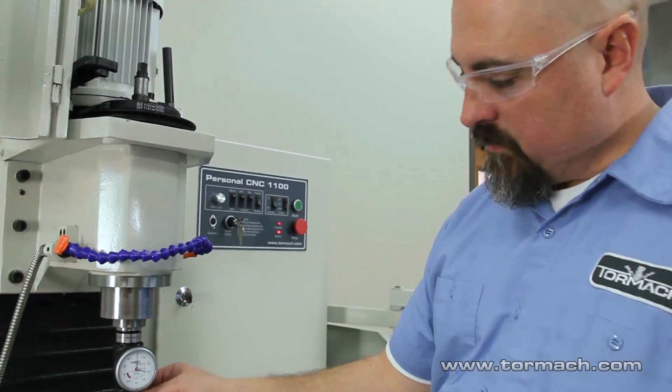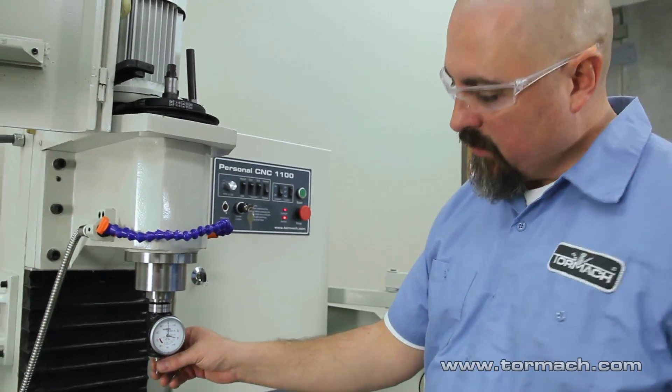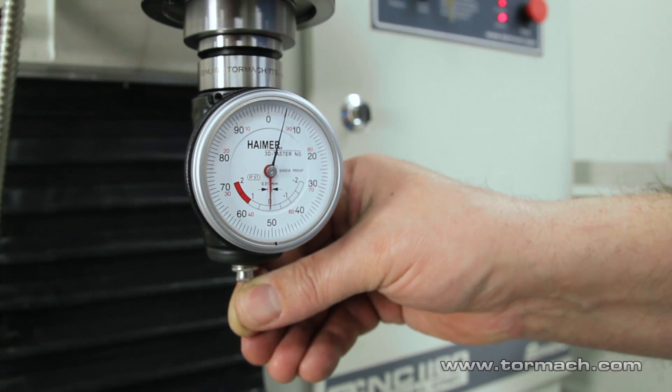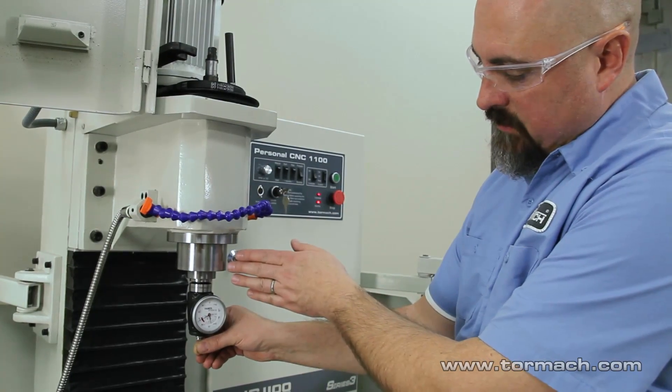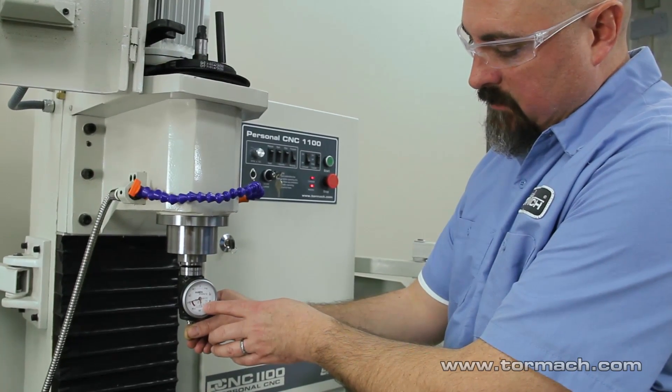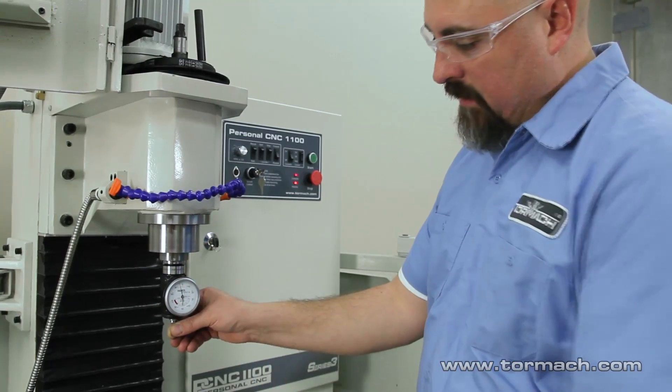This will show you true center of the spindle. There's a four millimeter ball on here. Two revolutions on the dial will bring the axes of the machine to true center of the Hymer. And it reads zero with the little red indicator and also with the black one.